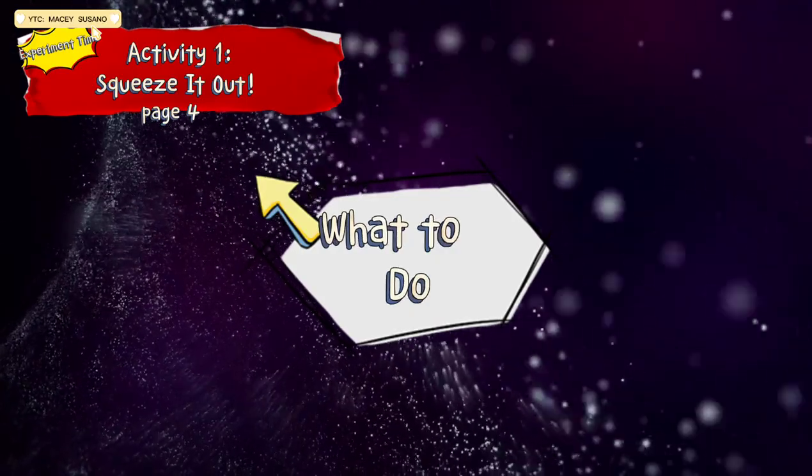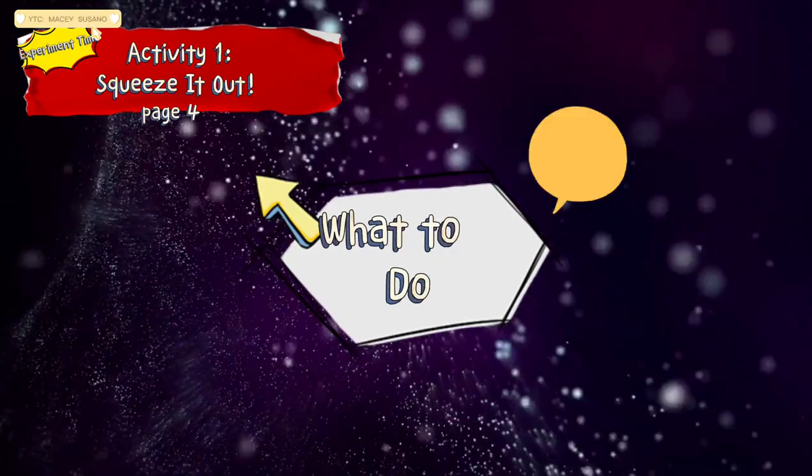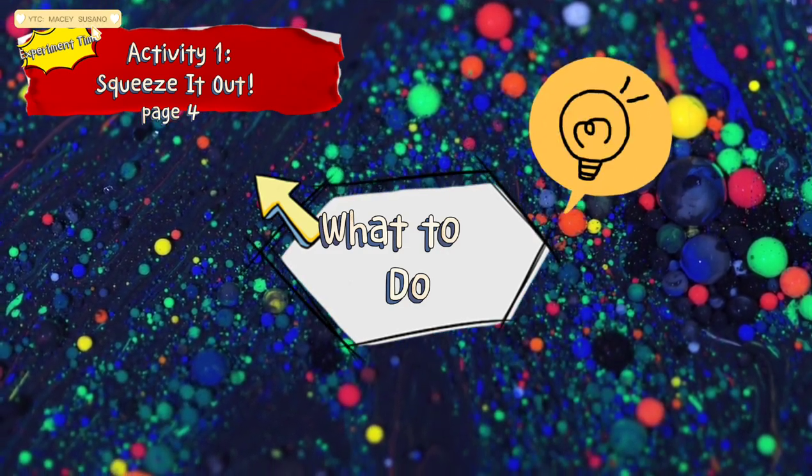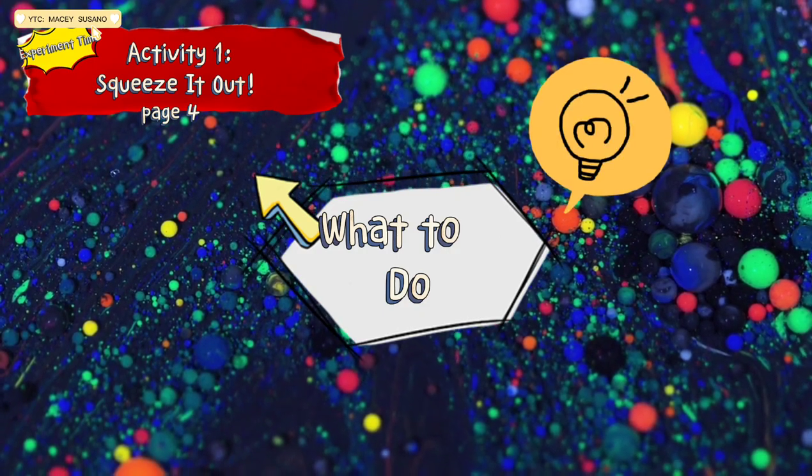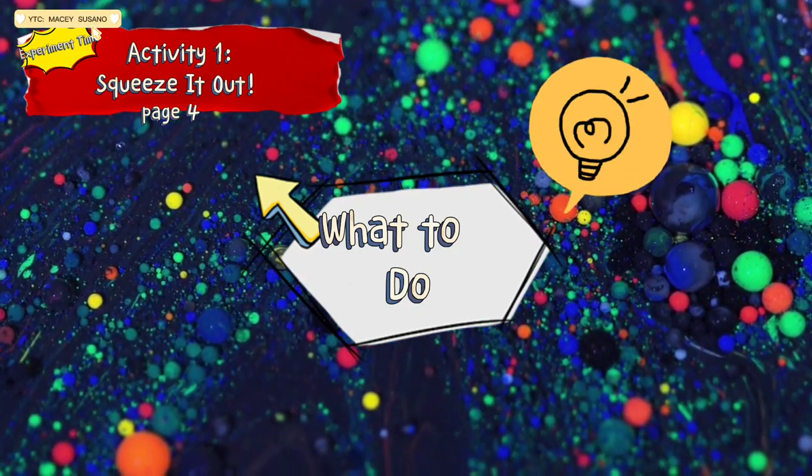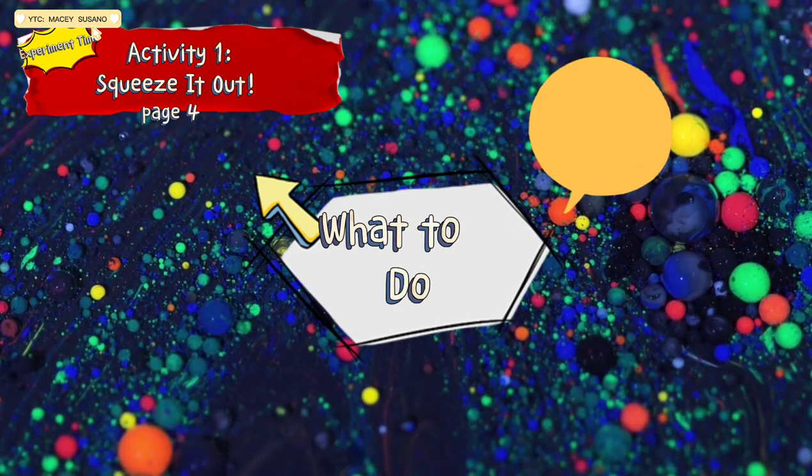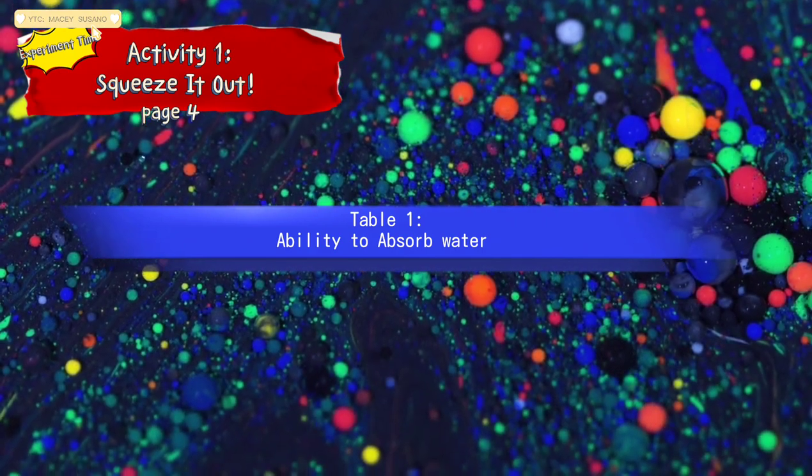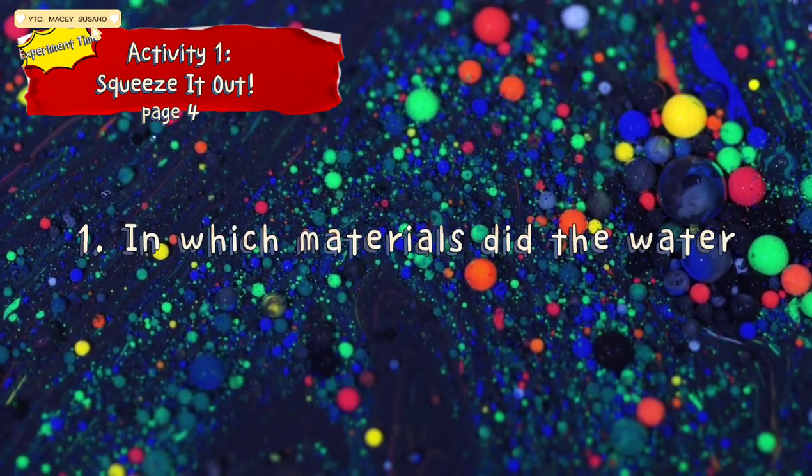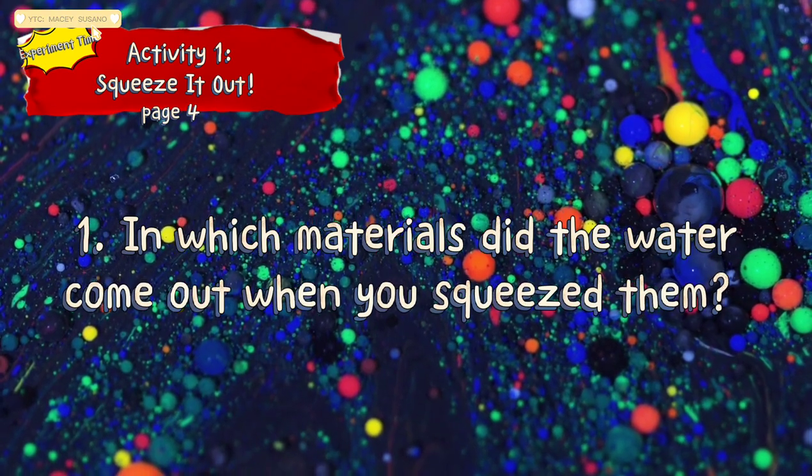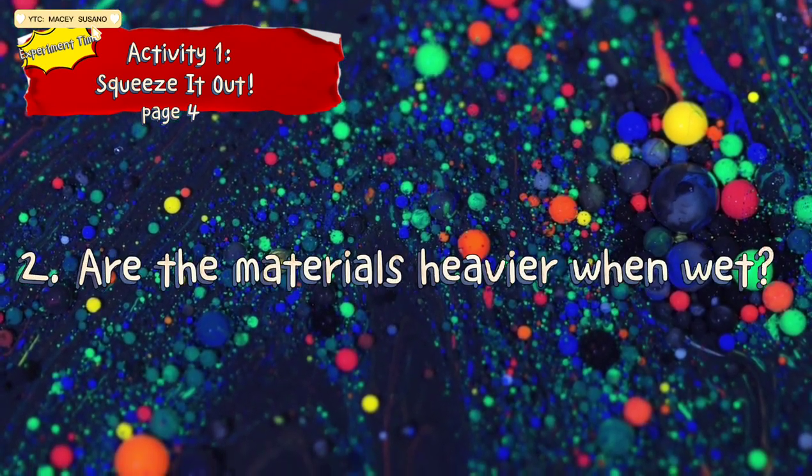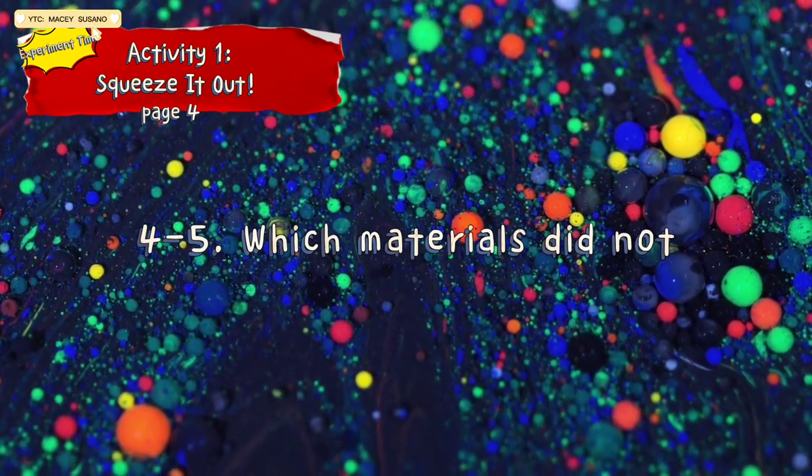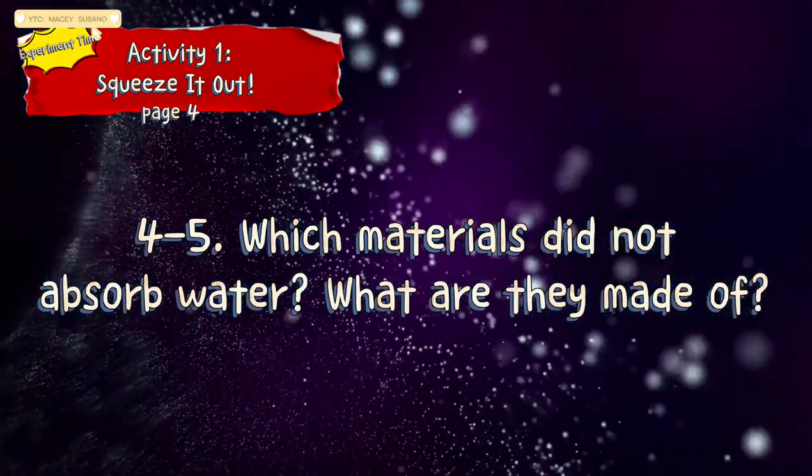Here's what you're going to do. Fill the basin with water and dip the rest of the materials in it for 30 seconds. Lift up each materials and squeeze them one by one on top of the basin. Record your findings in Table 1 and answer the guide questions. Guide questions are, in which materials did the water come out when you squeezed them? Are the materials heavier when wet? What do you think made the materials absorb water? Which materials did not absorb water? What are they made of?